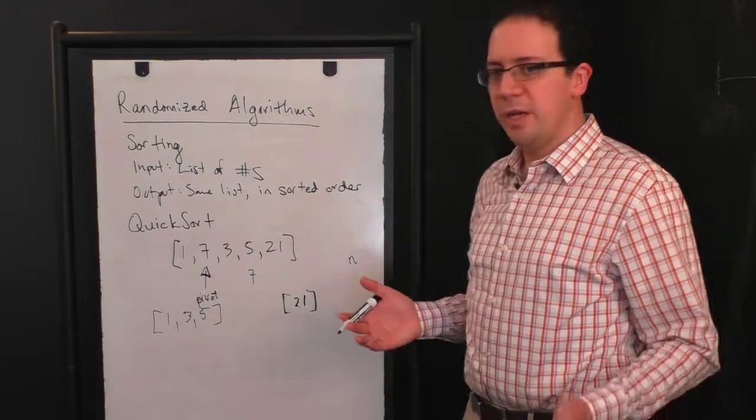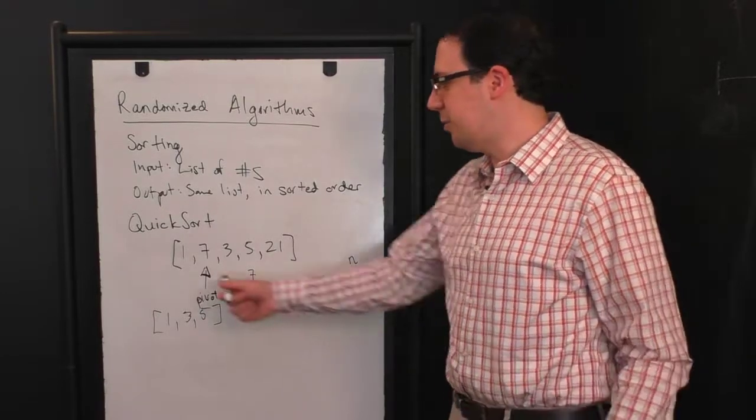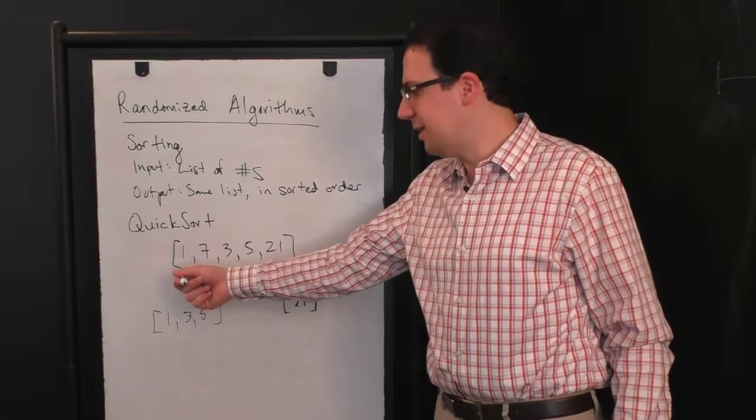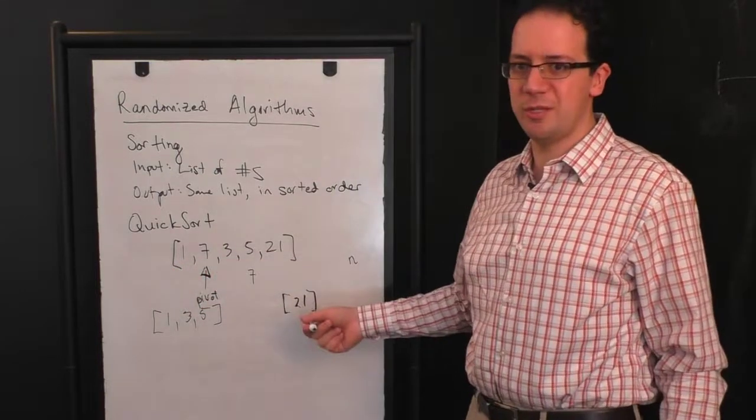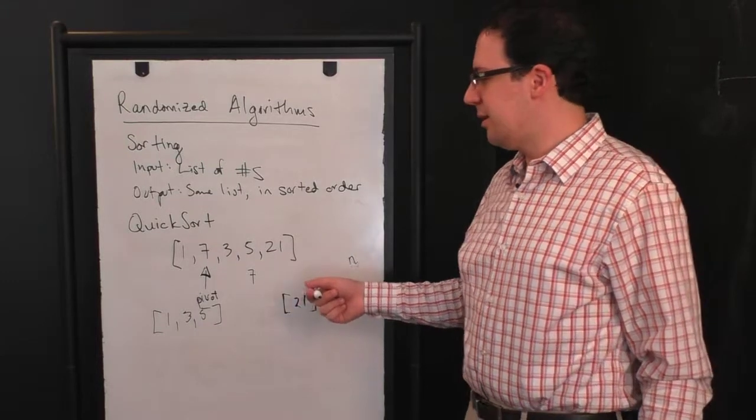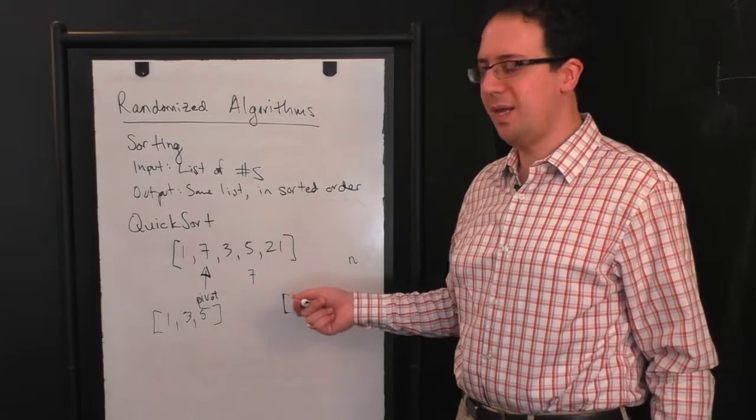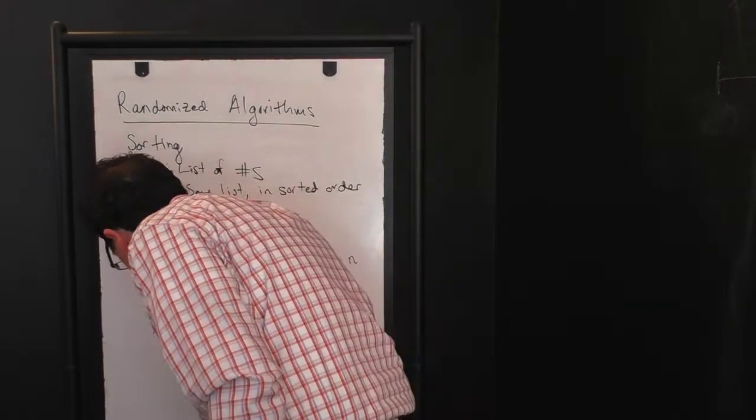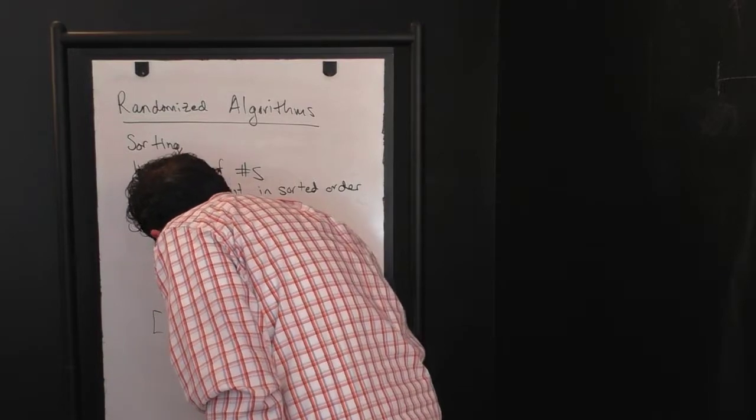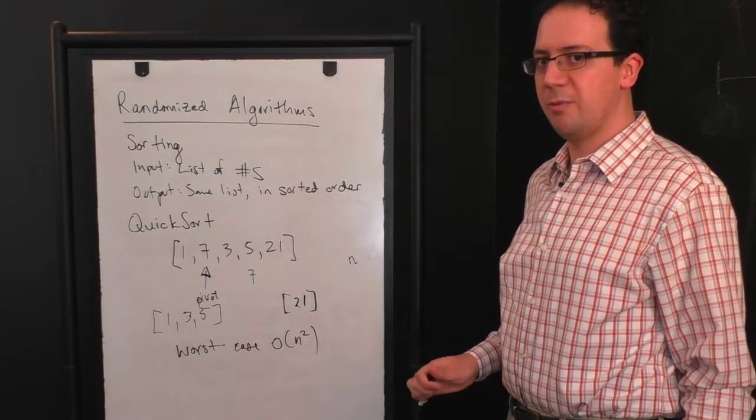And the answer is, well, in the worst case, you could have picked a really bad pivot. You could have picked one as your pivot, and then you would have nothing less than it, and the rest of your list would be greater than it. So in that case, you just reduce the size of the list by one. You might have to do that N times. So in the worst case, Quicksort takes order N squared operations, which is no better than the naive bubble sort that we saw.